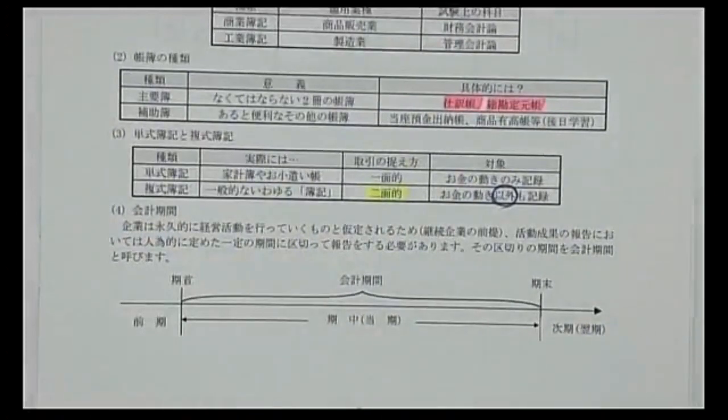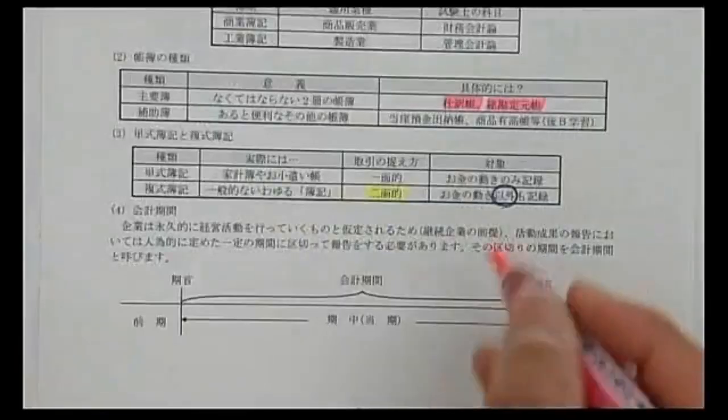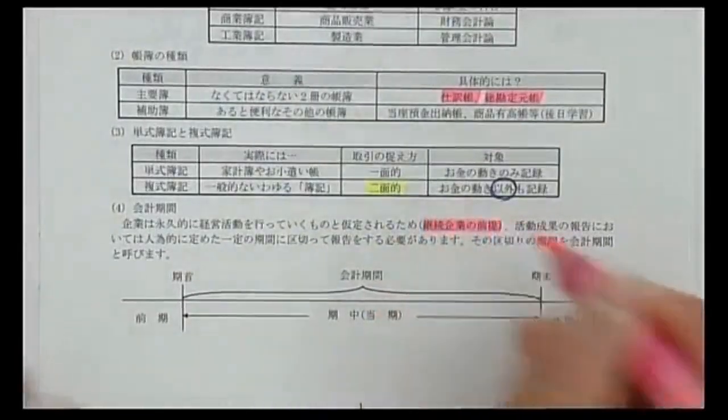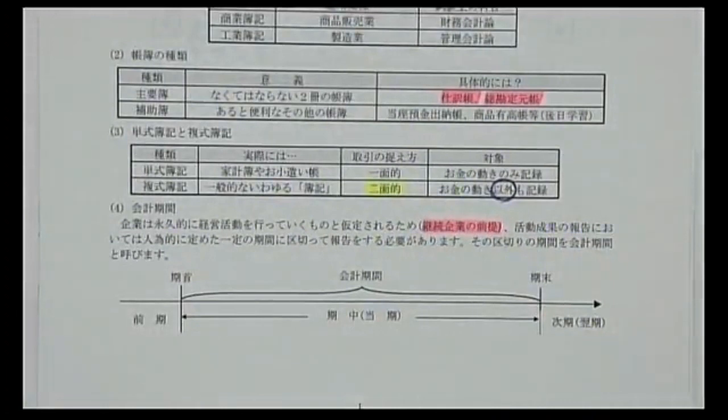本格的な学習に入る前の前提知識として、会計期間という用語を覚えましょう。財務会計上、企業は半永久的に活動を行っていくことを前提とします。これを継続企業の前提と言います。株式会社はもともと目的を達成したら解散するものでしたが、現代は永久に活動を行うと考えます。